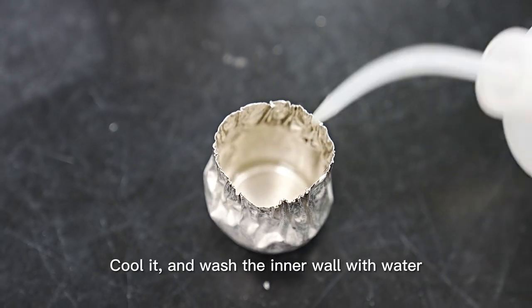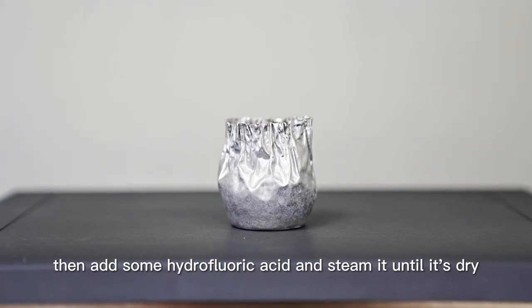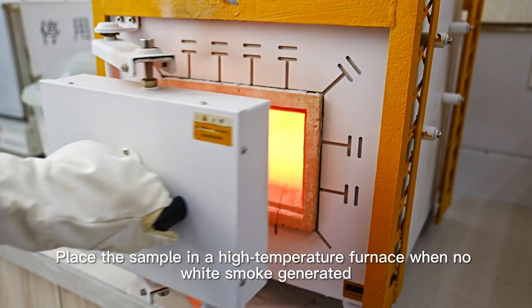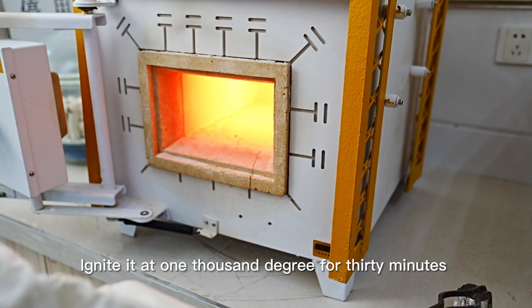Cool it and wash the inner wall with water. Then add some hydrofluoric acid and steam it until it's dry. Place the sample in a high-temperature furnace when no white smoke is generated. Ignite it at 1000 degrees for 30 minutes.